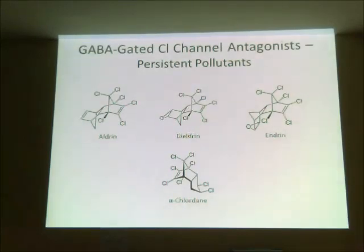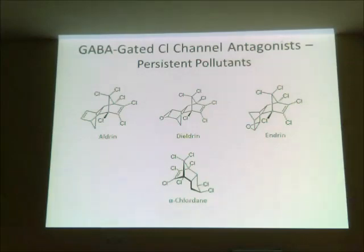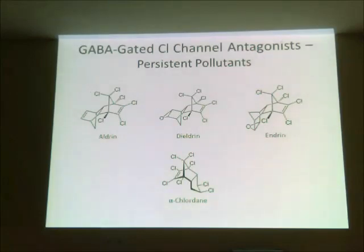In terms of mode of action, DDT interferes with sodium channels — it opens them — causing constant firing of neurons in the insect. These other compounds are GABA-gated — that is, gamma-aminobutyric acid-gated — chloride channel antagonists. The movement of sodium ions and the exchange of chloride ions creates electrical potentials enabling nerve transmission. These compounds, being antagonists for chloride channels, block these channels and also act to inhibit nerve transmission.